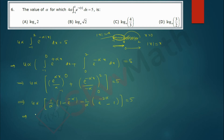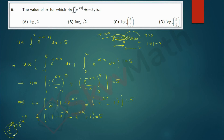Taking 1/α common, the α cancels, and we get: 4 × (1 − e^(−α) − e^(−2α) + 1) = 5. Now, notice e^(−2α) = (e^(−α))². Let y = e^(−α). Substituting, we get 4 × (2 − y − y²) = 5.